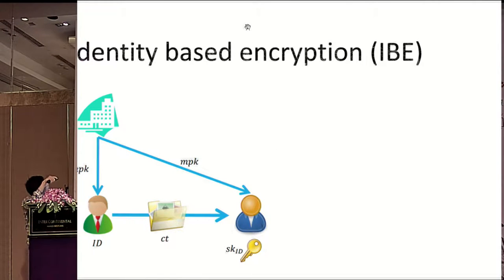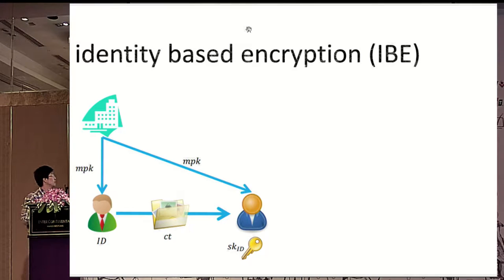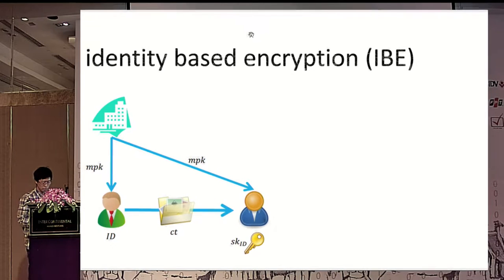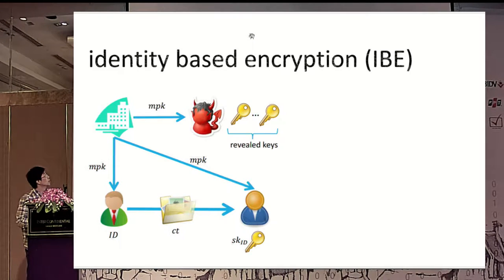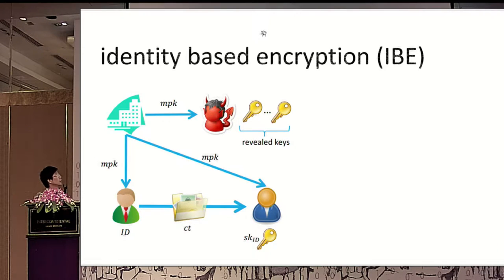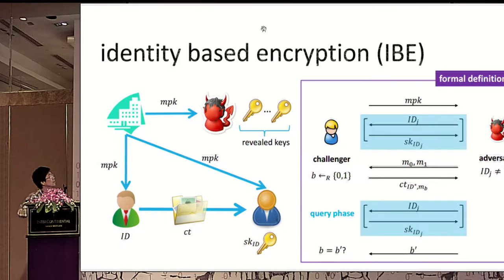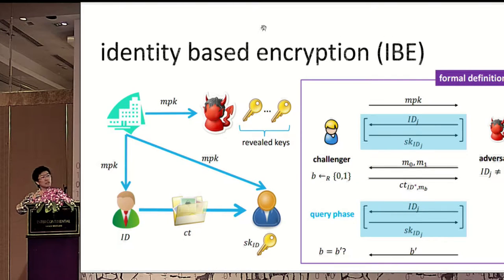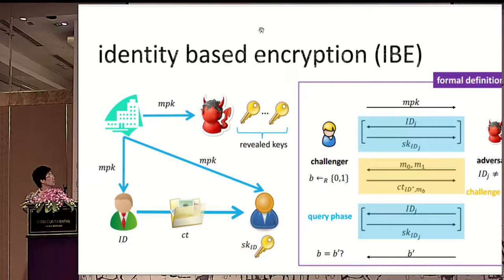The first term is Identity-Based Encryption. It is an encryption system with an authority which publishes a master public key and issues secret keys for every user. In order to encrypt a message, the user needs to know the master public key and the user ID. We want to resist an adversary which holds the master public key and can obtain some secret keys from users. There are two query phases that allow the adversary to ask for secret keys, and a challenge phase that allows the adversary to see the ciphertext.